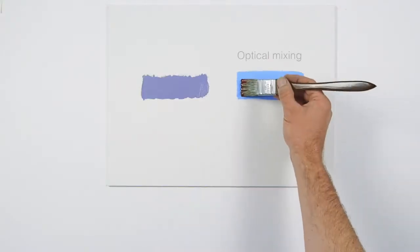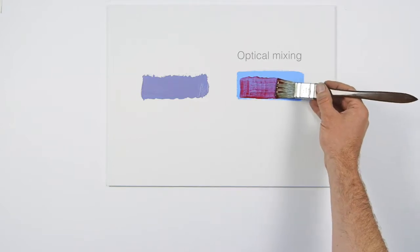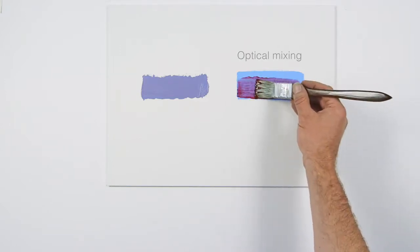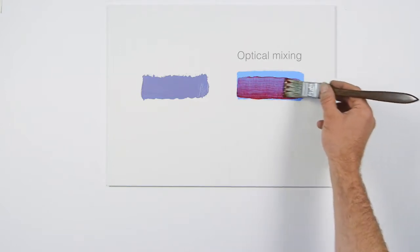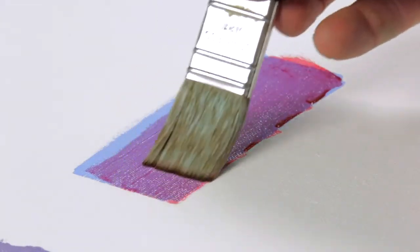I'm layering alizarin crimson over pale blue to create an optically mixed violet. Further layering can make the mixtures more complex and interesting.